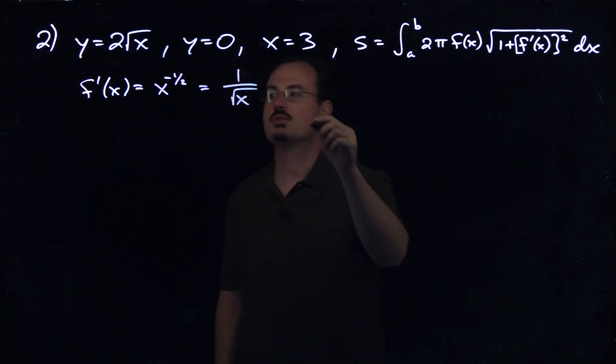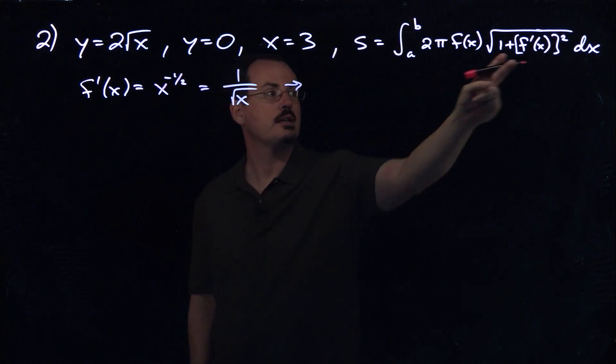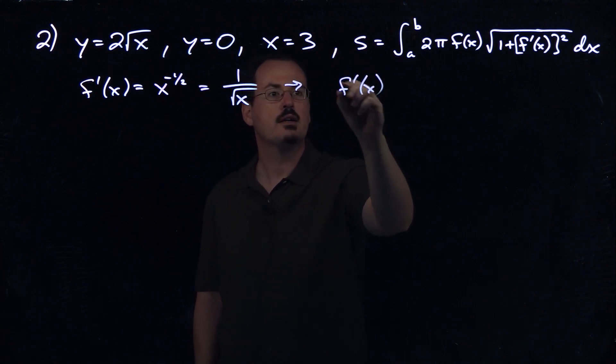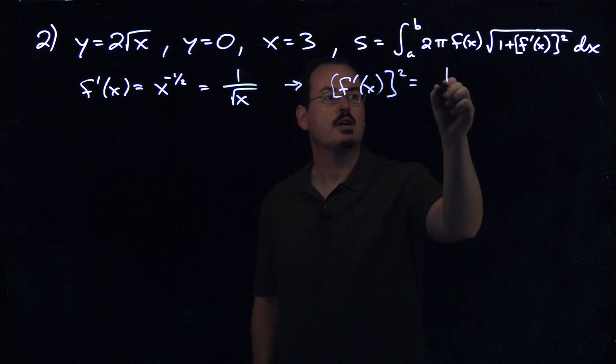Okay, so if we square that, we're going to need to square that for this part of the formula here. So f prime of x squared is going to just be 1 over x.